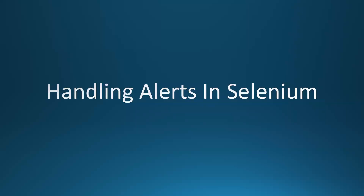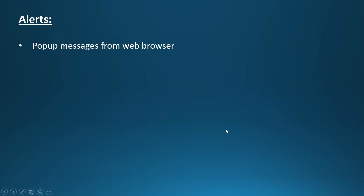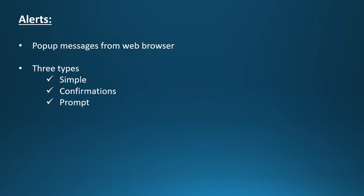Hi everyone. In this video we are going to discuss how to handle alerts in Selenium. Alerts are pop-up messages from the web browser. There are three types: simple alert, confirmation alert, and a prompt alert, where we actually provide some input into a text box.